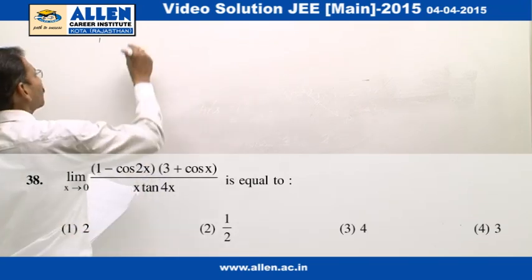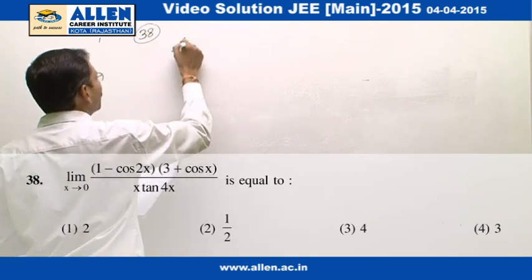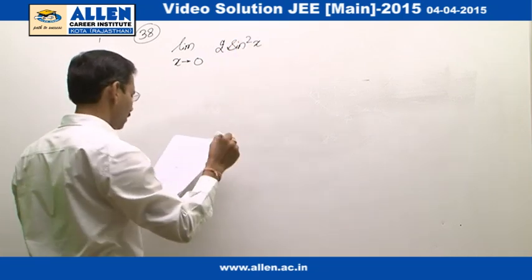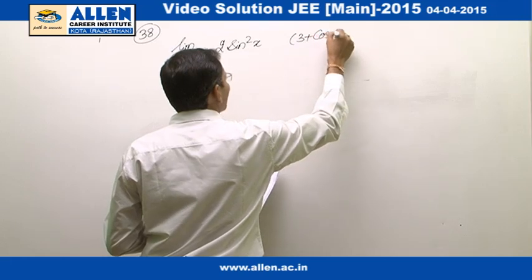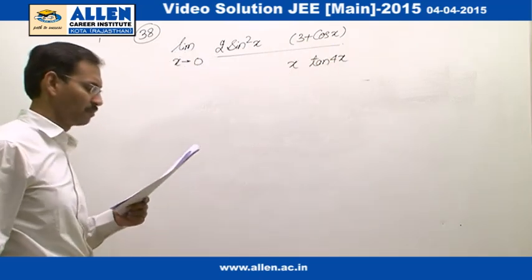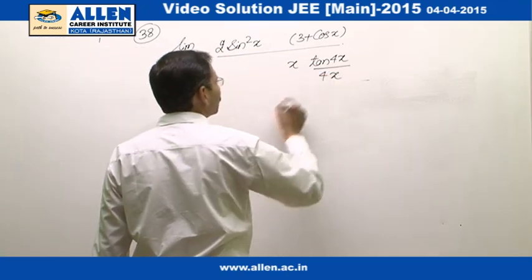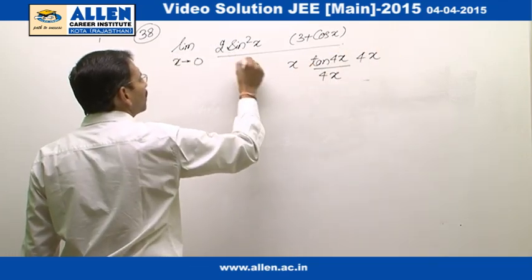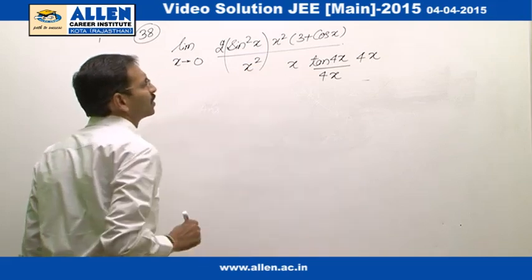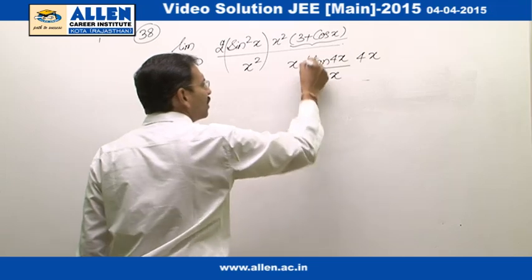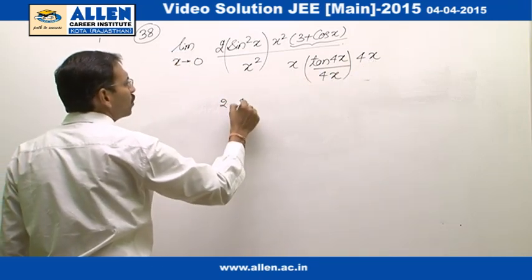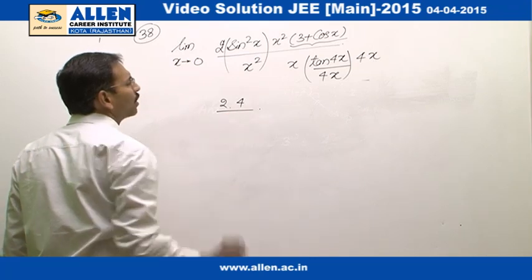Question number 38 — a very simple limit problem. Limit x approaching 0: 1 minus cos 2x can be written as 2 sin squared x; 3 plus cos x is kept as it is; and x tan 4x is in the denominator. We divide tan 4x by 4x and multiply and divide x squared accordingly. This expression gives a limit of 1 for the sin squared term and approaches 4 for the tan 4x part, while x squared is cancelled.